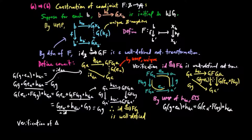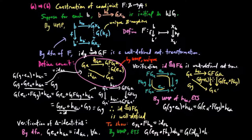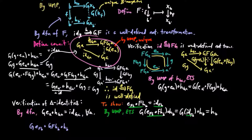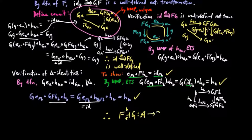Finally, we show the triangle identities for an adjoint situation. By the definition of e, we already have that one of the triangle identities is satisfied. Now we show the other, namely that for an object b, e_{f(b)} ∘ f(h_b) equals the identity on f(b). By the universal mapping property of h, it is enough to show that g(e_{f(b)}) ∘ f(h_b) ∘ h_b equals g applied to the identity of f(b) composed with h_b, which equals h_b. We have g(e_{f(b)}) ∘ g(f(h_b)) ∘ h_b equals g(e_{f(b)}) ∘ h_{gf(b)} ∘ h_b by the naturality of h, which equals h_b by the triangle identity. Therefore, f is left adjoint to g, which completes the proof for part one. We omit the proof for part two since it is completely analogous.